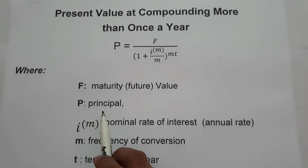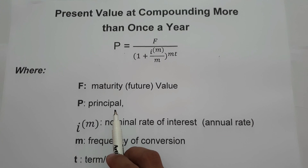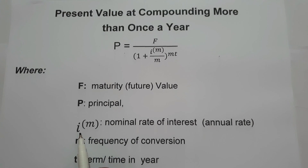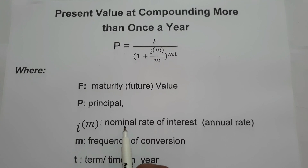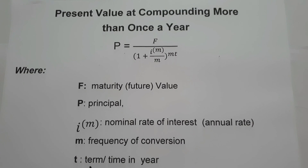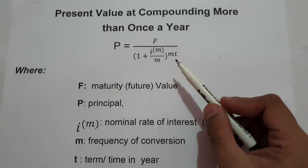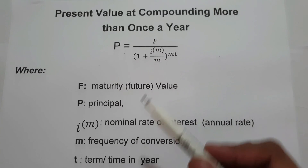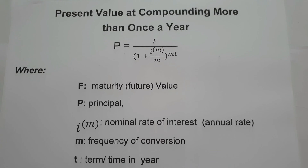P is the principal or the present value. Instead of using R, we are going to use I raised to M — that is the nominal rate of interest, or what we call the annual rate. Then M is the frequency of conversion or the number of periods, and T is the term or time in years. This is the formula we are going to use to find the present value compounding more than once a year.